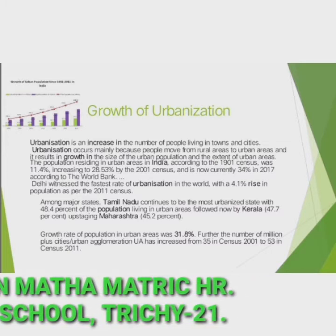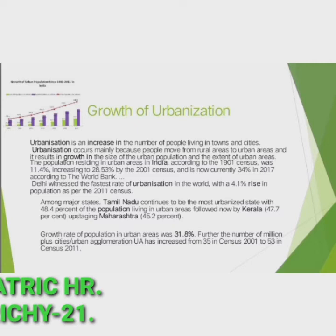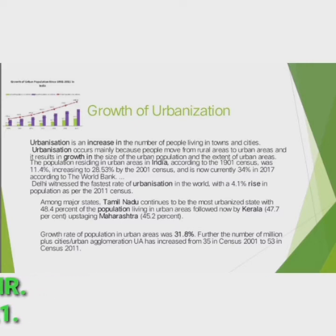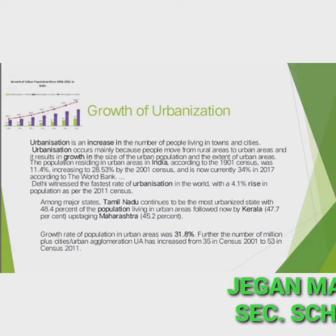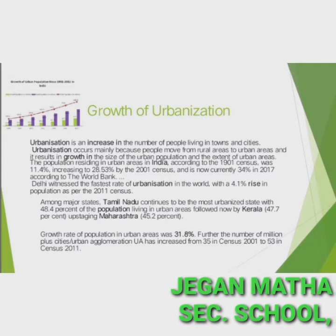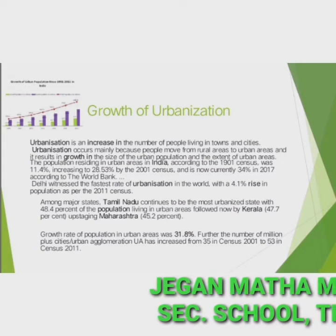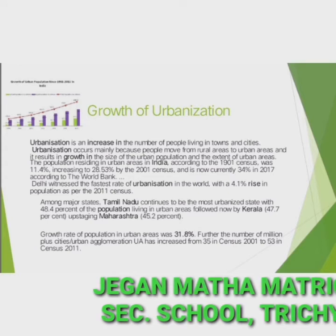according to the World Bank. Delhi witnessed the fastest rate of urbanization in the world with a 4.1% rise in population as per the 2011 census. Among the major states, Tamil Nadu continues to be the most urbanized state with 48.4% of the population living in urban areas, followed by Kerala at 47.7%, and Maharashtra at 45.2%. The growth rate of population in urban areas was 31.8%. Further, the number of million-plus cities and urban agglomerations has increased from 35 in the census.